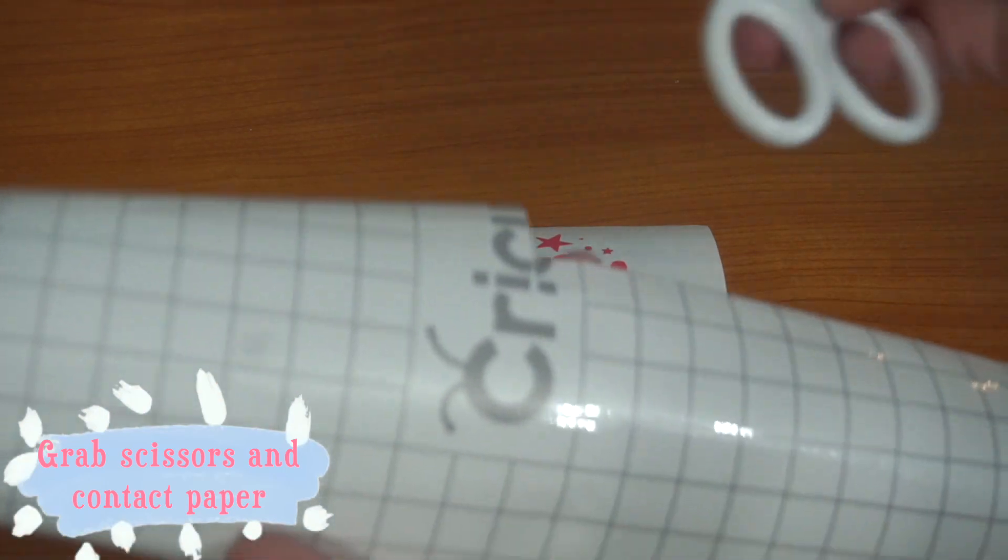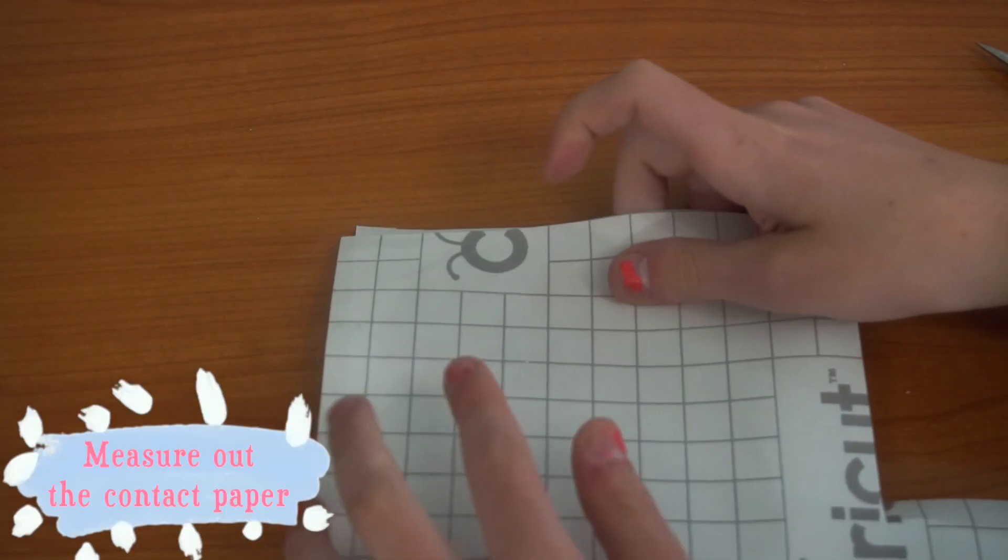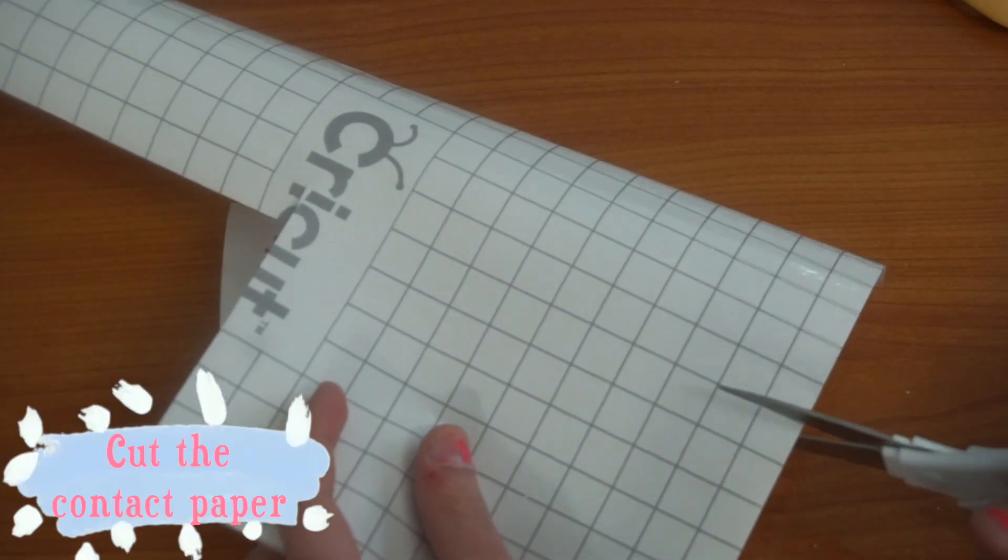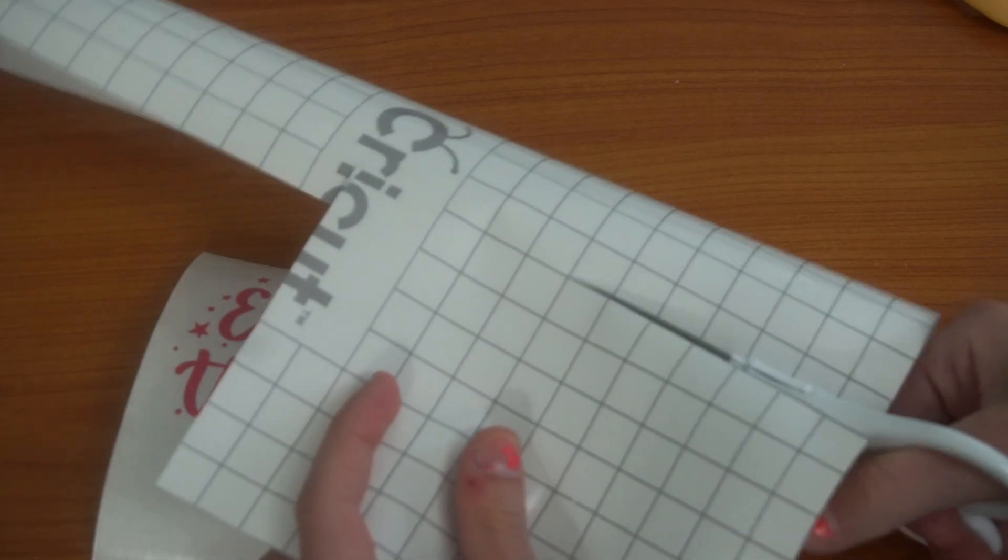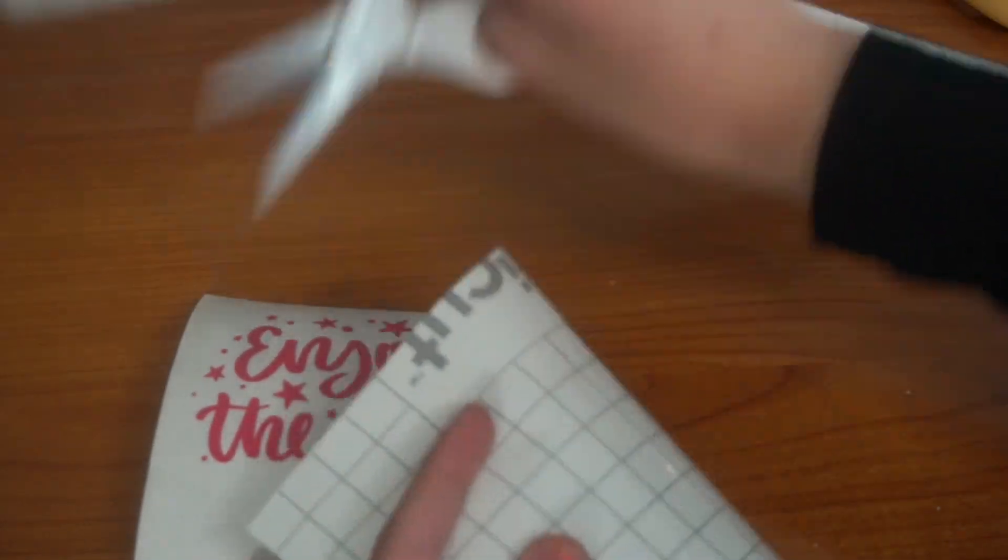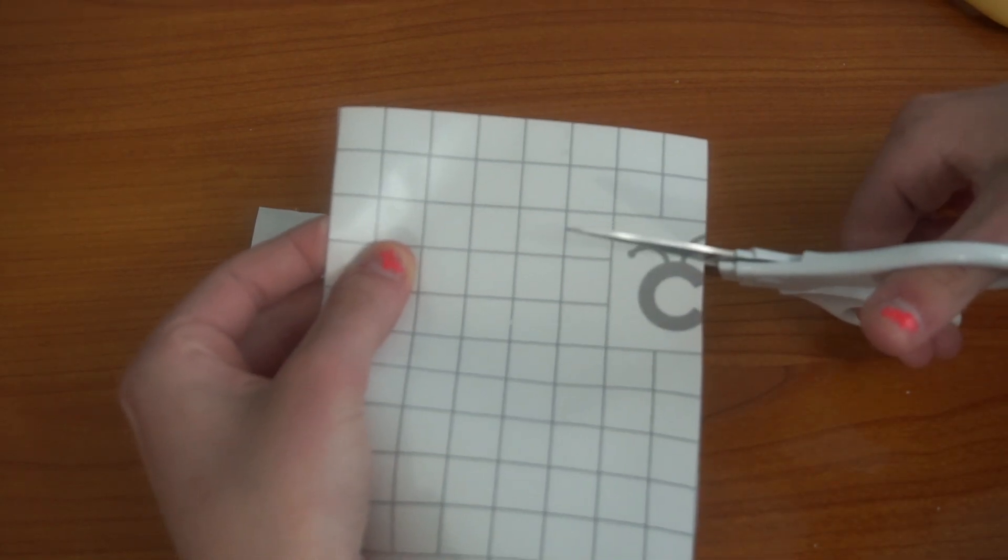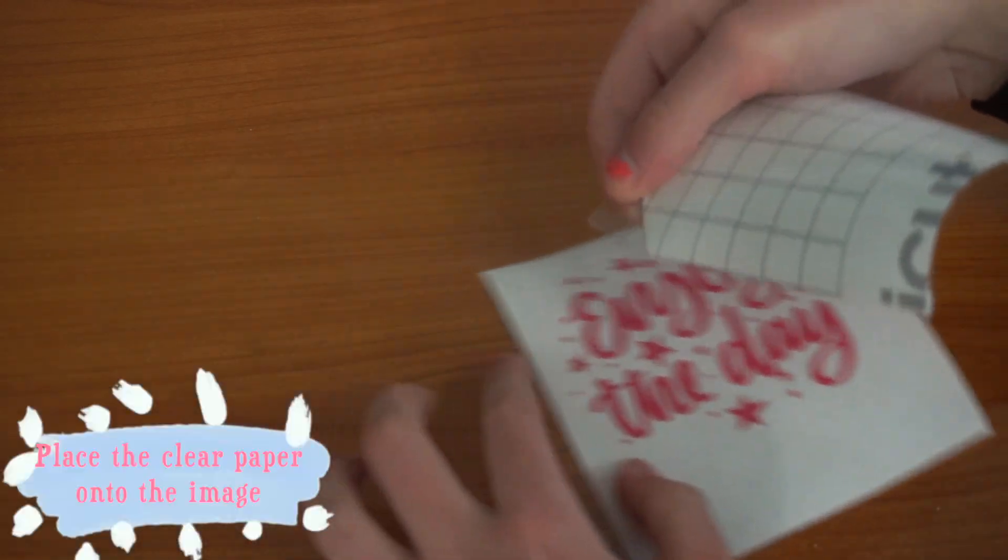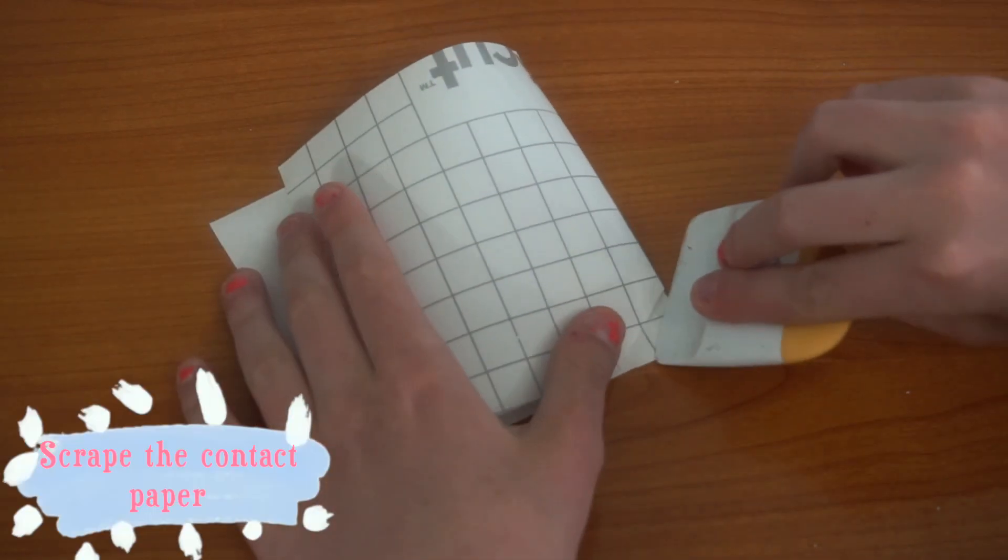Grab scissors and contact paper. Measure out how much contact paper you need to cut. Cut the correct amount of contact paper. Use the scraper to scrape down the contact paper to avoid air bubbles.